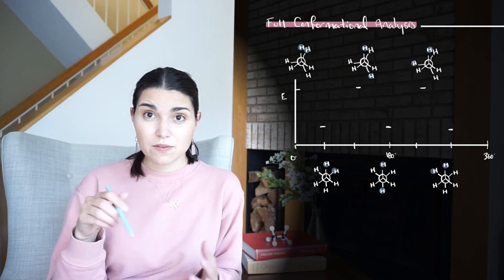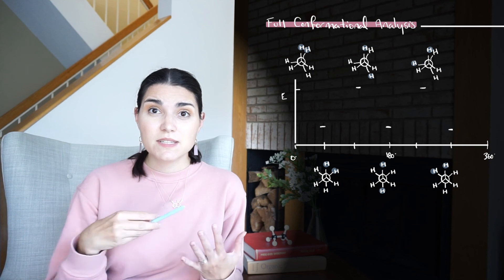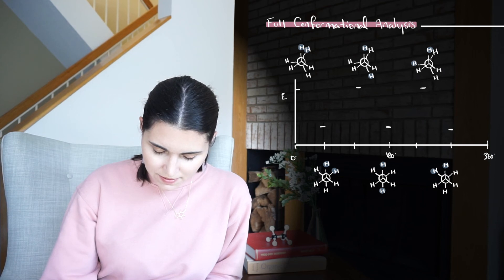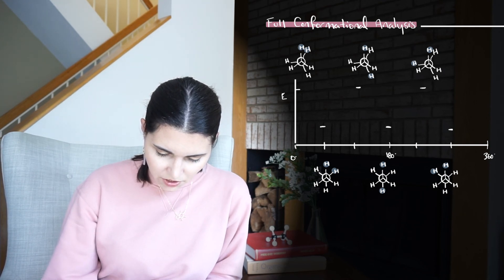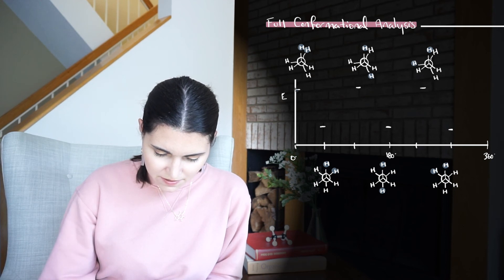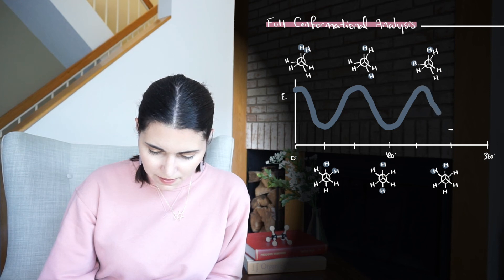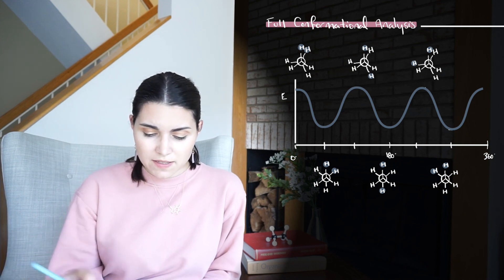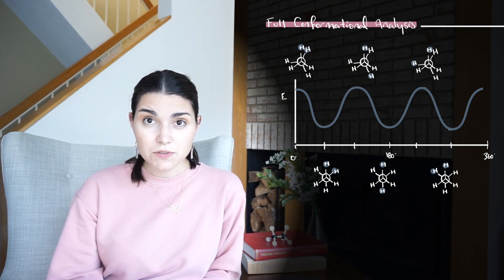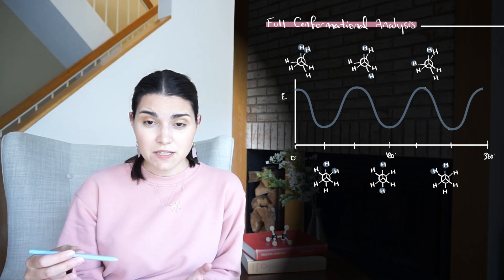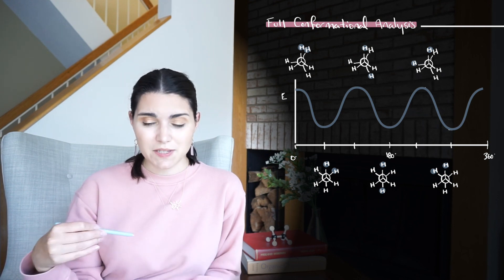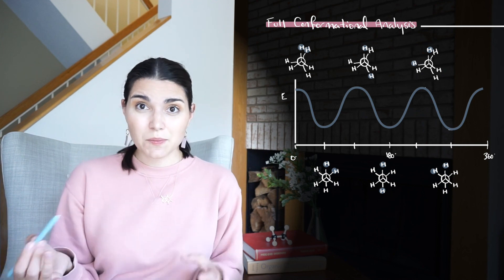And so what happens as you rotate through the eclipsed, the staggered, eclipsed, staggered, is you see the energy is going to go up and down and up and down. And so we'll draw a little curve to represent that energy change here. So it starts high, goes low, high, low, high, low, and it would just keep going over and over and over again as you rotate it. But the important thing to note here is that all of the eclipsed forms that we drew are degenerate, so they all three have the same energy, and all of the staggered forms are degenerate, so all three of those have the same energy as we rotate it around the circle. Now that's not always the case with every molecule, but it is with ethane.